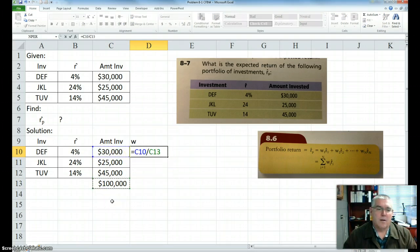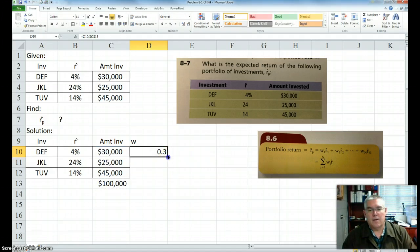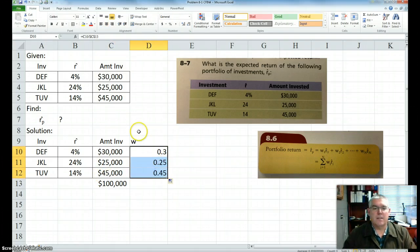So it's 3 tenths, right? 30% of, 30% of the investment is in investment DEF. And I want to be careful because I want this bottom one to be absolute, so I'm going to have dollar-four. And if I copy it down, I have 25% and 45%. So now I have my weights, okay?